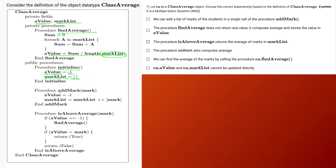Then there is add_mark, which takes one parameter — the mark you want to add to the mark_list. It also resets a_value to negative one, because when you add a new mark you want to recompute the average. So for that computation we reset a_value to negative one, and then we append the mark to the mark_list.